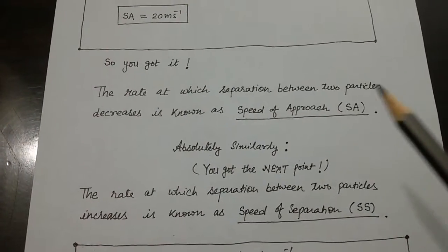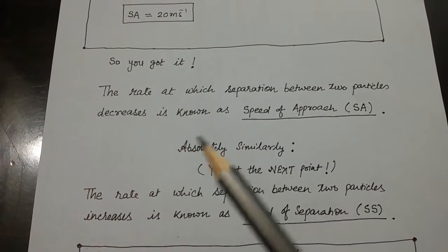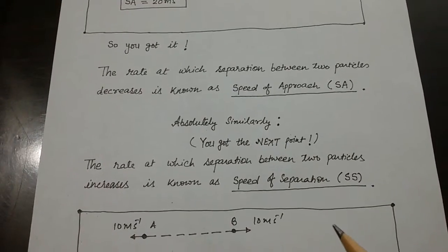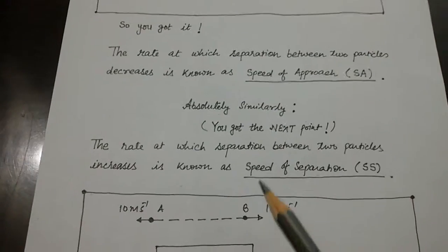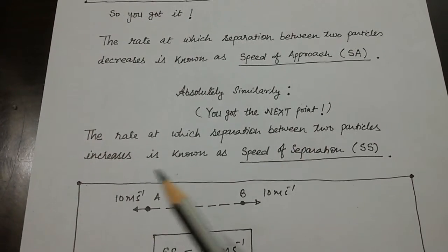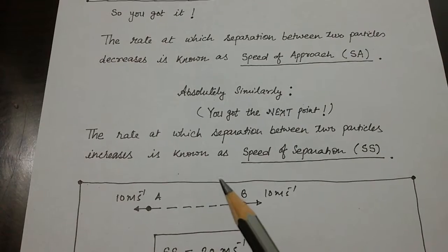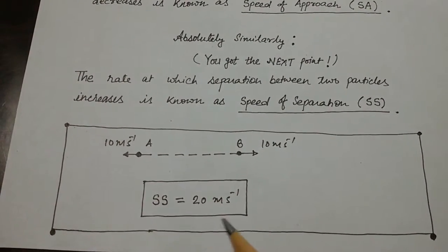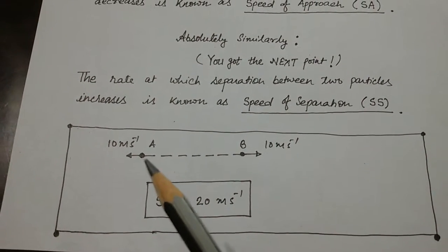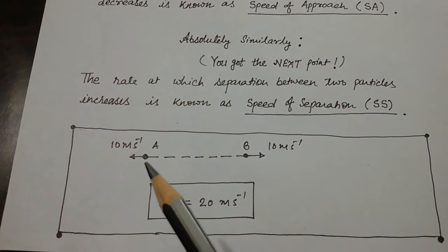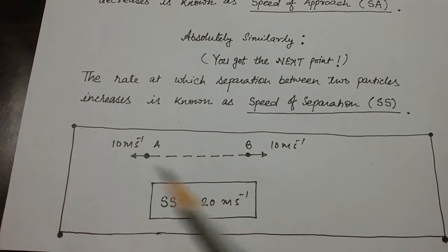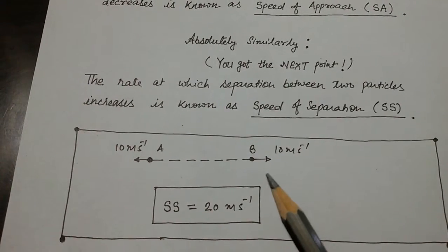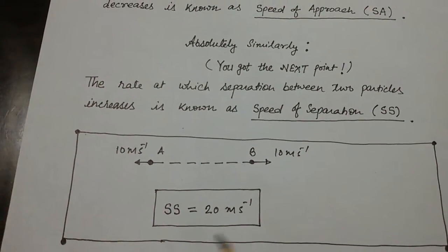The rate at which separation between two particles decreases is known as speed of approach, as we have seen in this example. And absolutely similarly, the rate at which separation between two particles increases is known as speed of separation. For example, the two particles are moving apart from each other at 10 meters per second each, so at this moment speed of separation is 20 meters per second.